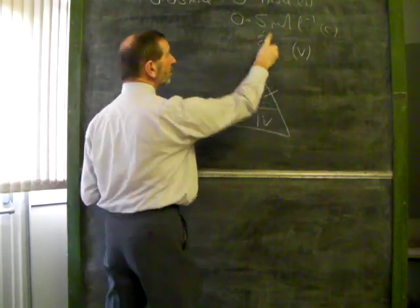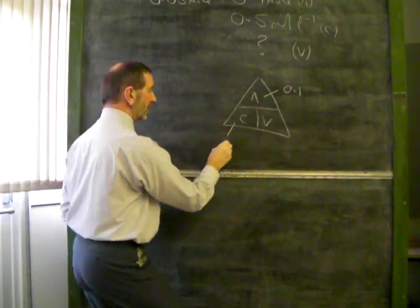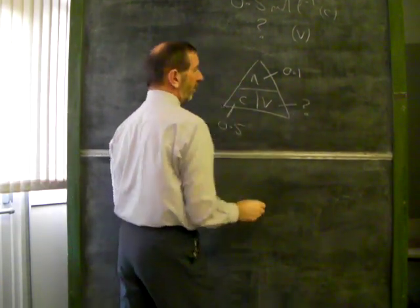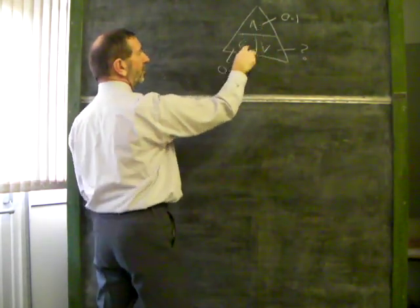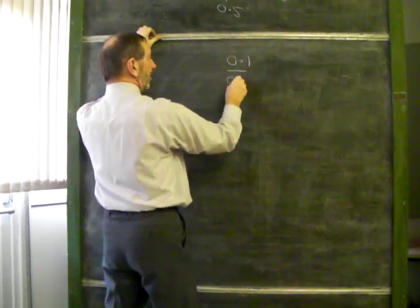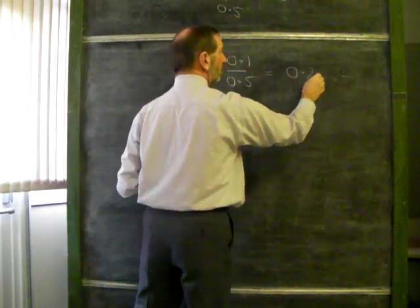We know the number of moles is 0.1. We know the concentration is 0.5. What we'd like to know is, what's the volume? Volume is N over C, and in other words, 0.1 divided by 0.5 comes to 0.2.